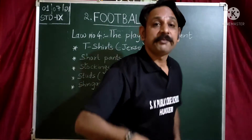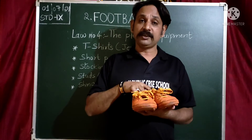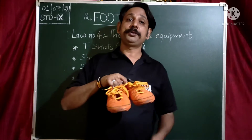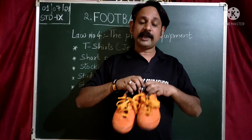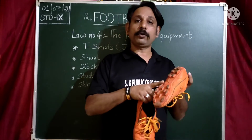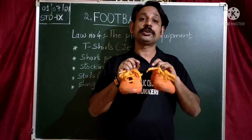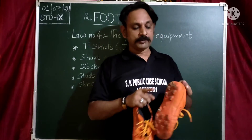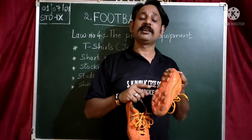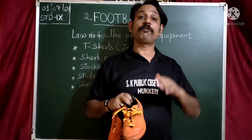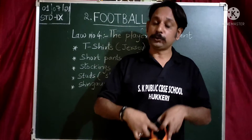Then we have shoes to wear because we are going to run, kick the ball, and jump. The football shoe is similar to our sports shoes. When you see the down part — the sole part of the shoe — it is known as struts. So the football shoe is known as struts. Below the sole, you can see some grips. These grips are for controlling the body while running, kicking the ball, and getting a good grip. These are the grips below the football shoes.